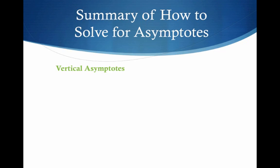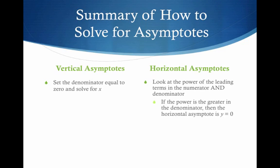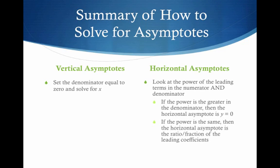Here's a summary of how to solve for asymptotes. For the vertical asymptote, set the denominator equal to zero and solve for x. For horizontal asymptotes, look at the power of the leading terms in the numerator and denominator. If the power is greater in the denominator, the horizontal asymptote is y equals zero. If the power is the same, the horizontal asymptote is the ratio of the leading coefficients.